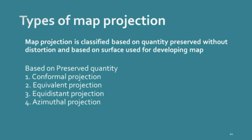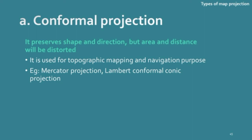Types of map projection are classified first based on the quantity preserved without distortion. There are many methods to project a spherical area into a plane area, but whenever this occurs, one quantity is preserved while others are distorted. Based on that, projections are classified into four. The first is conformal projection, which preserves only shape and direction but distorts area and distance. It is used for topographic mapping and navigational purposes — examples include Mercator projection and Lambert conformal conic projection.